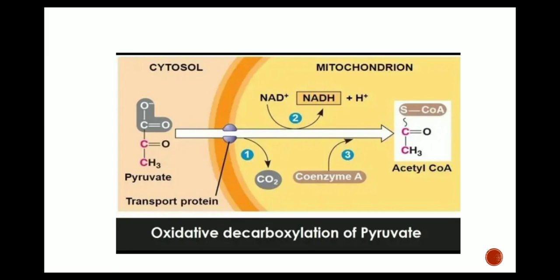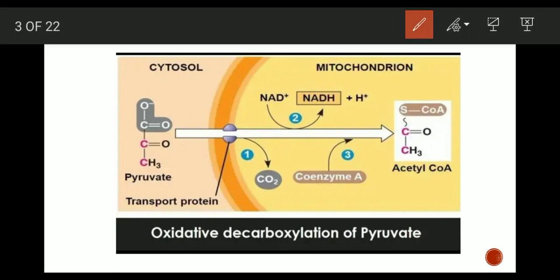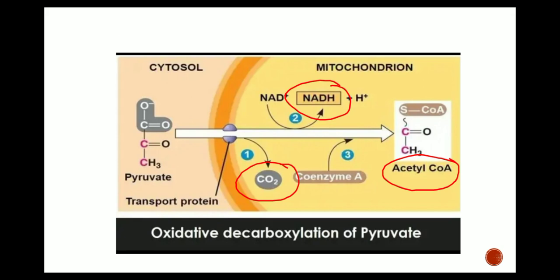In oxidative decarboxylation of pyruvate, the pyruvate obtained from glycolysis is converted into acetyl coenzyme A, which is a two-carbon compound and the connecting link between glycolysis and the Krebs cycle. In this process, a CO2 molecule is liberated from the pyruvate molecule and NADH is formed. So acetyl coenzyme A is formed, NADH is formed, and CO2 is liberated.